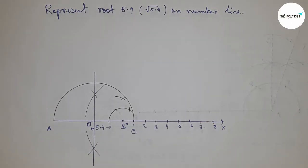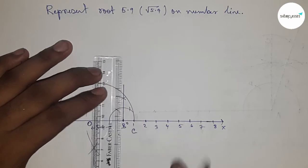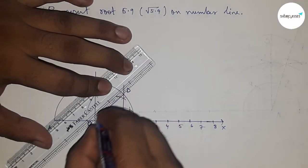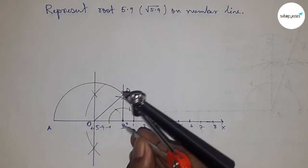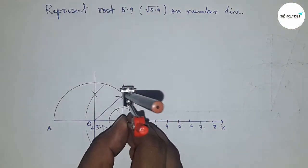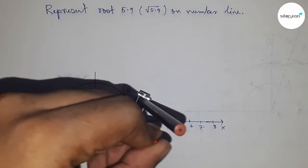Join this which meets the semicircle at point D. Join OD, which is the radius of the semicircle. Take the distance or length BD with a compass and draw an arc.